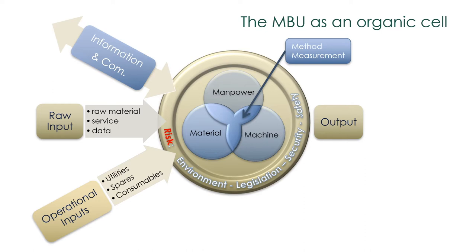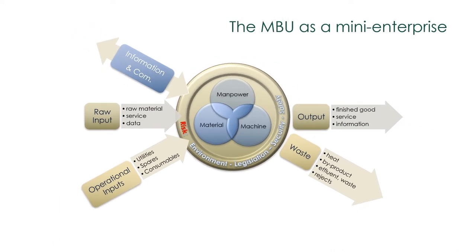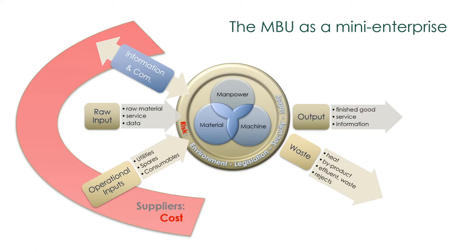The processes convert inputs into output. Along with output, you will have waste such as heat, by-product, effluent waste, or rejects. Your output could be the semi-finished or finished product, service, or information to other MBUs or to the external customer. Let's look at the MBU as a healthy mini-enterprise that generates a profit. Inputs and outputs are classified into cost and income items. Information and communication are cost items — look at the cost of an ERP system and management salaries. Raw and operational inputs are also cost items. The MBU itself is also a cost item.